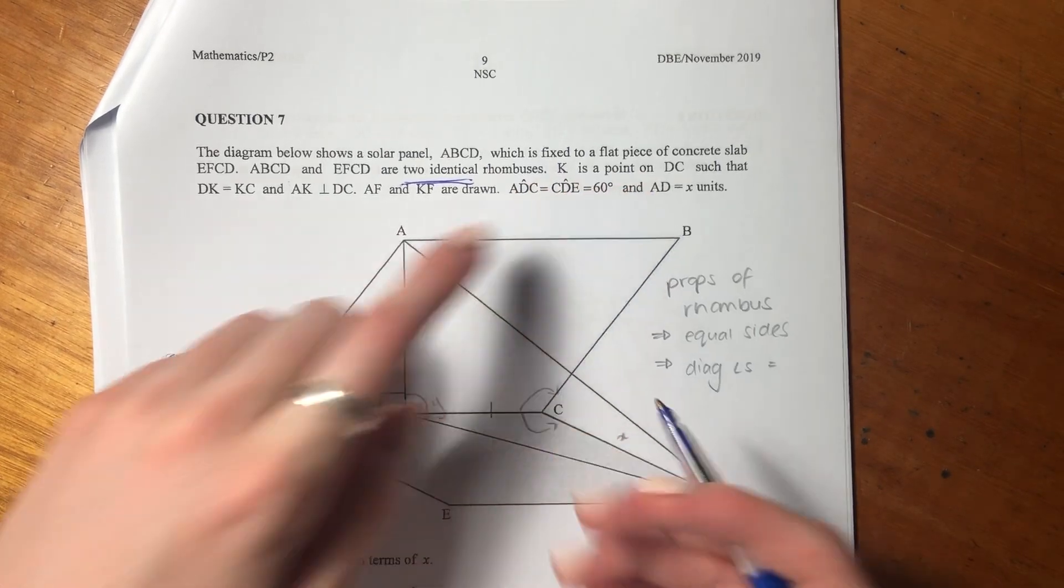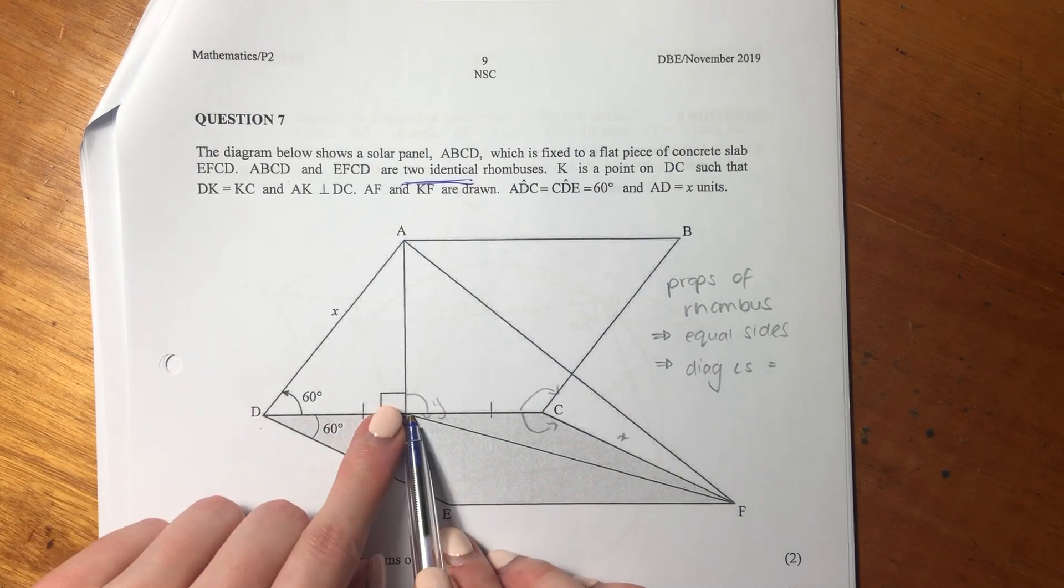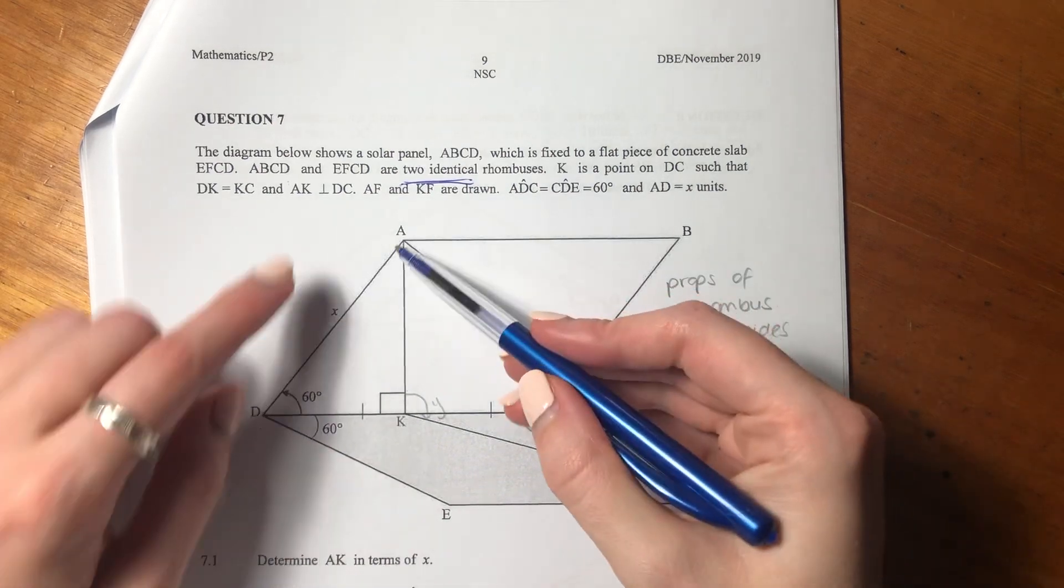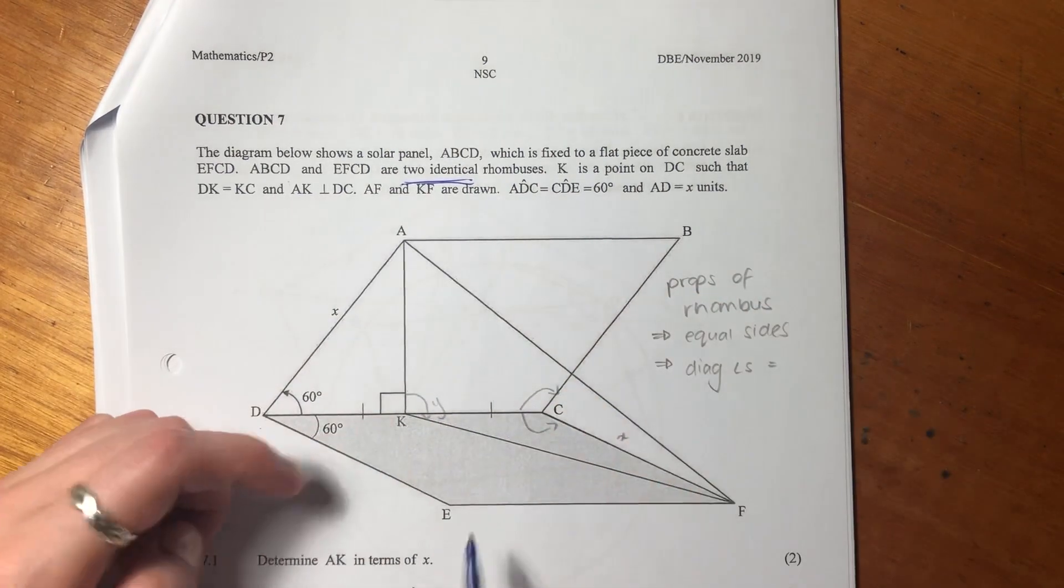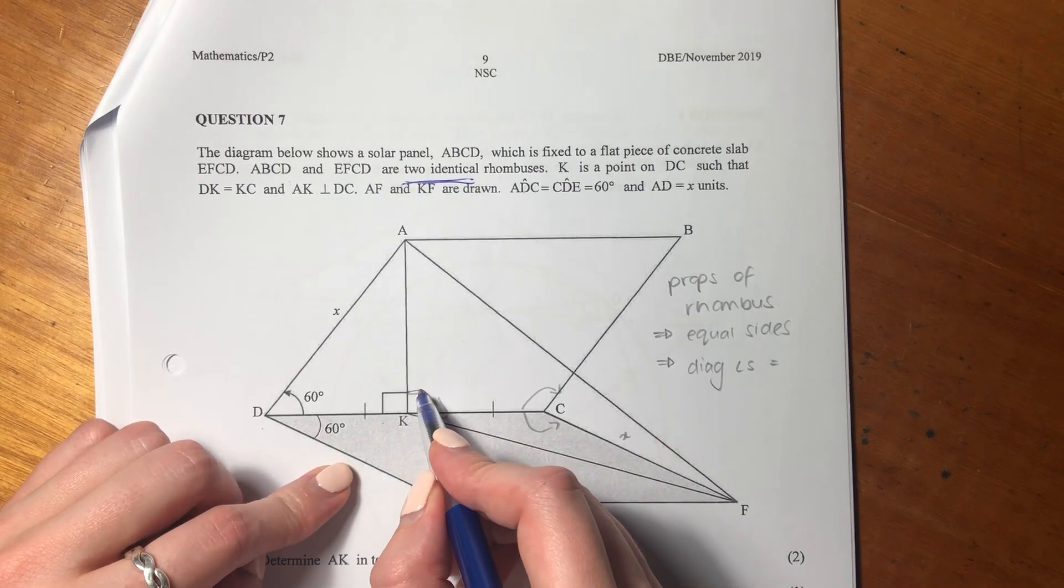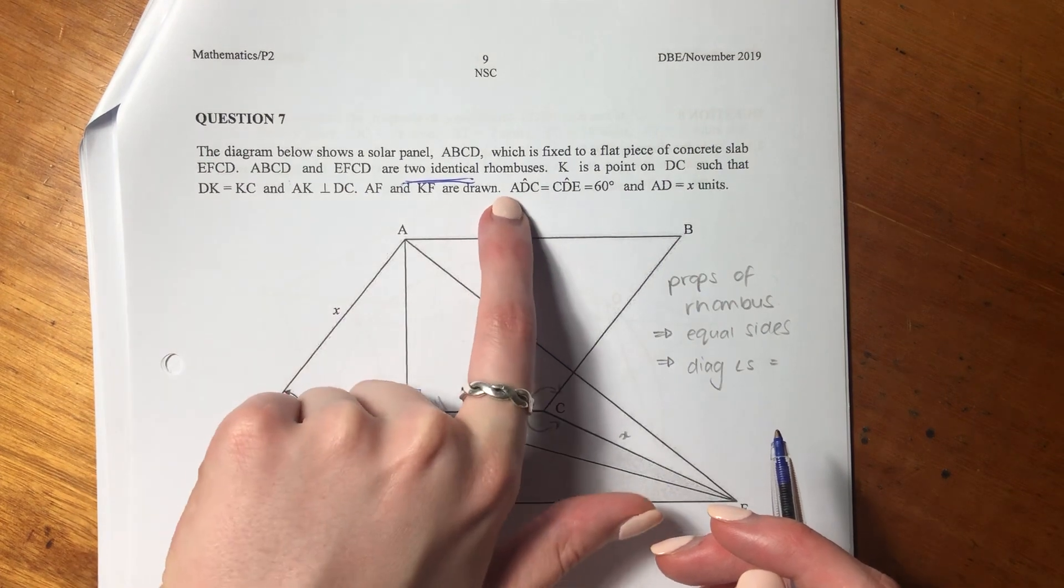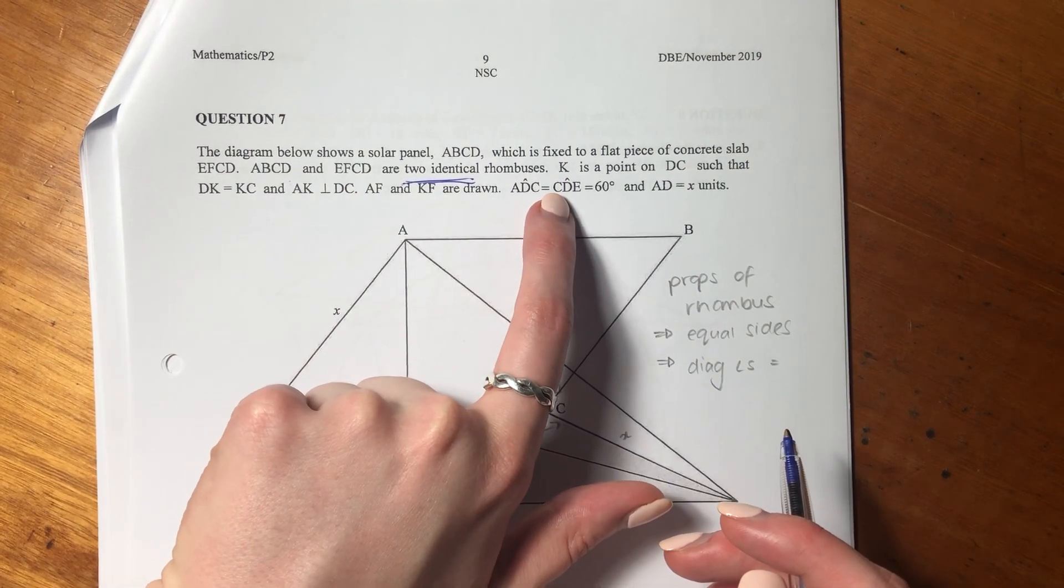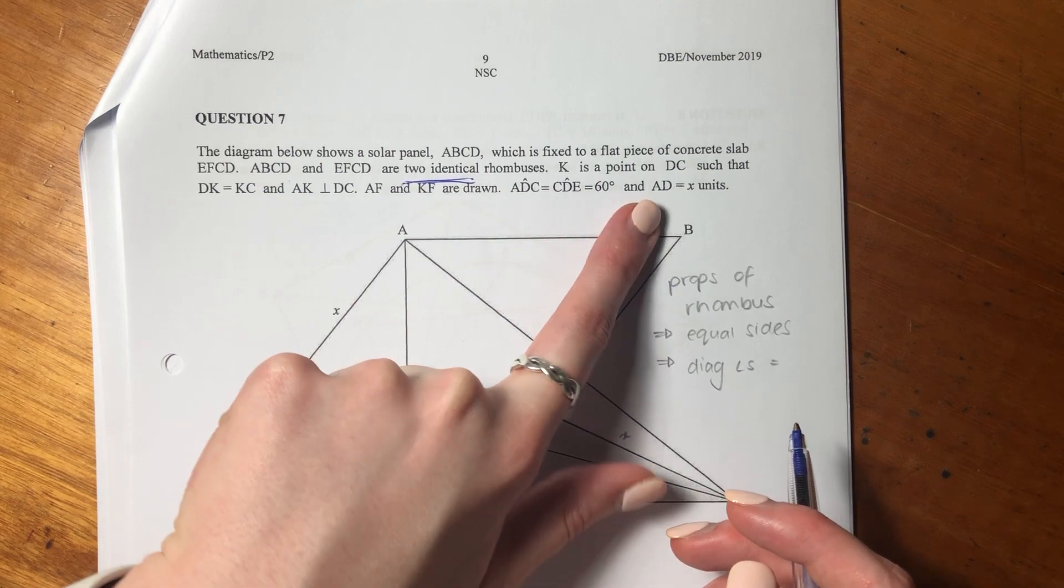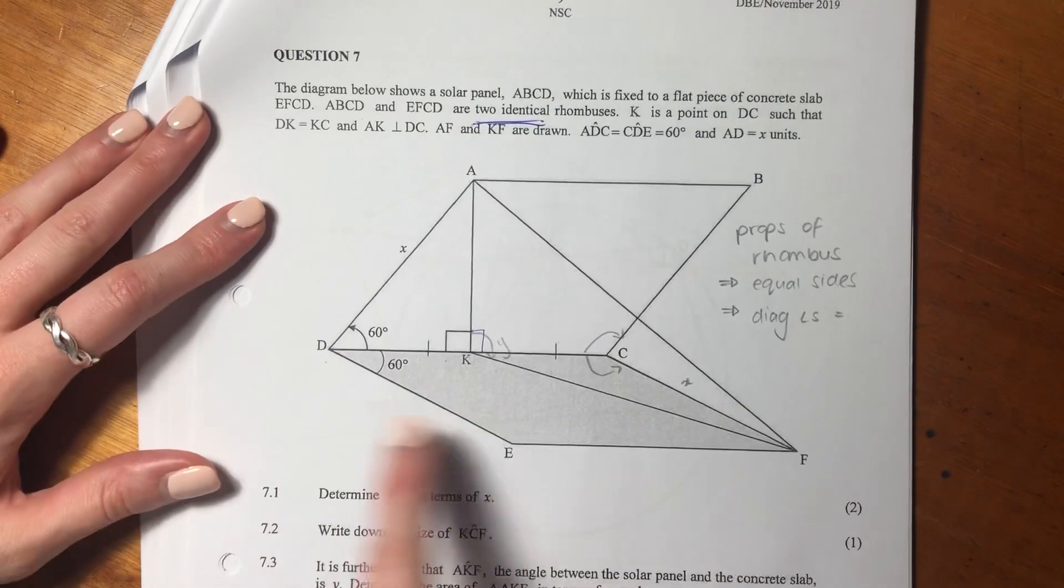K is a point on DC such that DK equals KC. AK is perpendicular to DC, so that's a right angle. The angle ADC equals the angle CDE which equals 60 degrees, and AD equals six units.